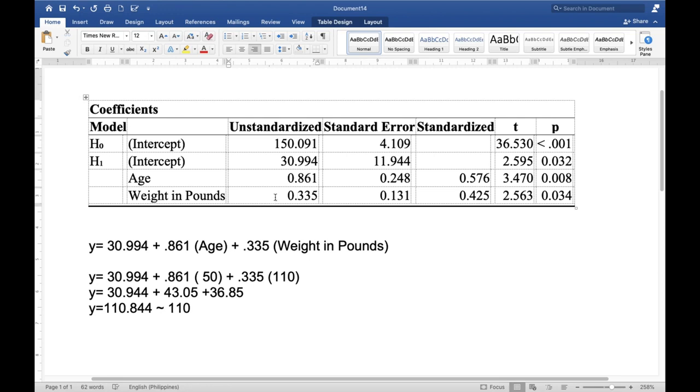On the other hand, a pound increase of the patient or of the cases is an increase in the systolic blood pressure reading by 0.351 holding age constant.